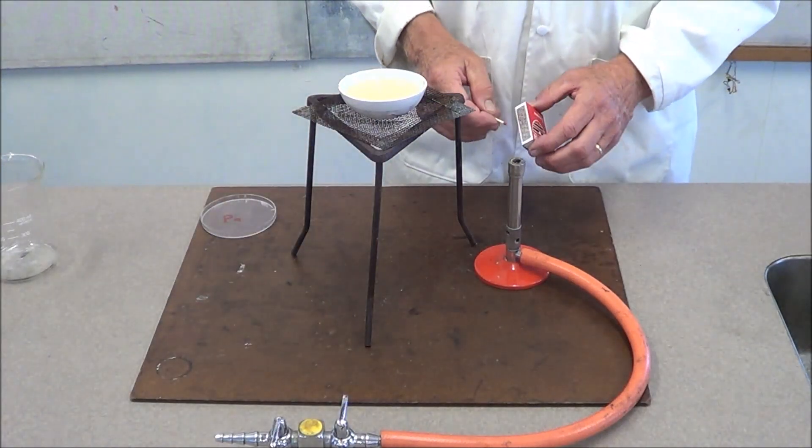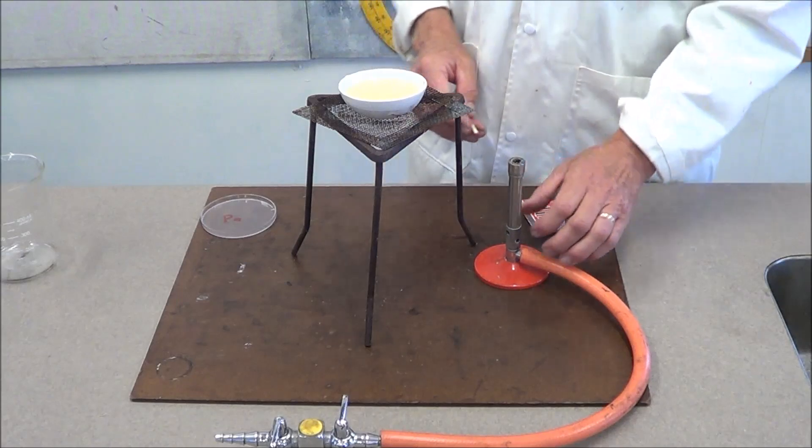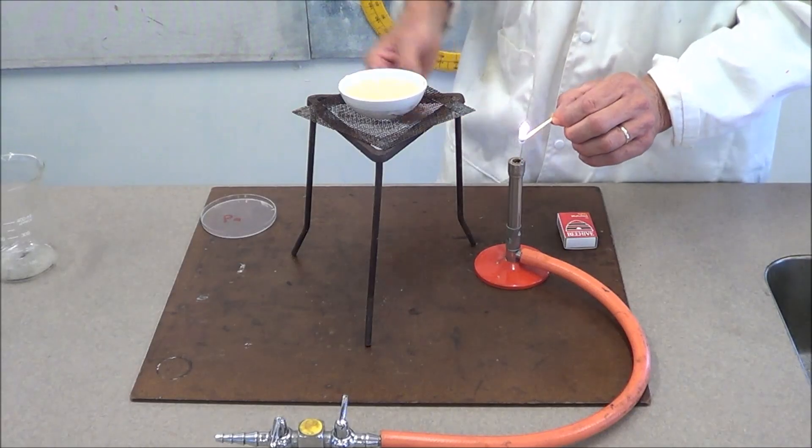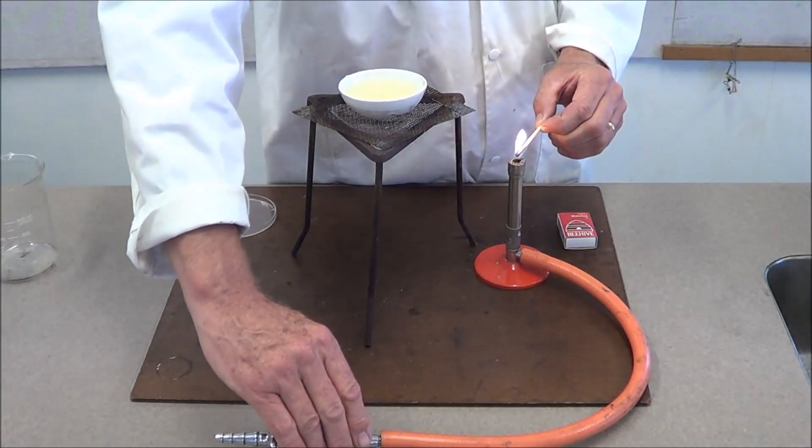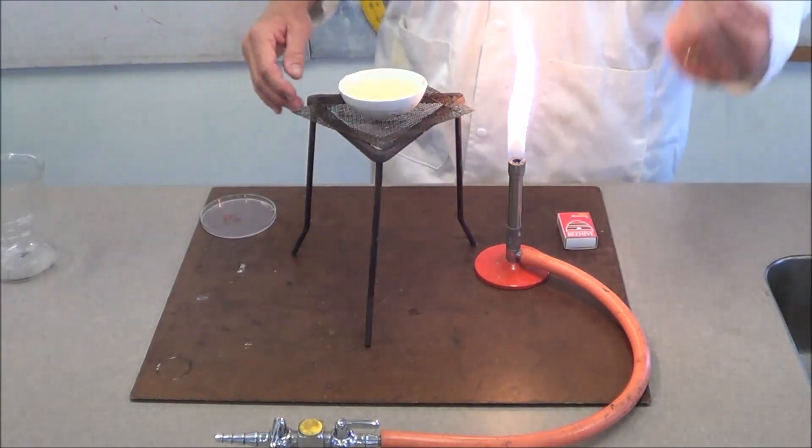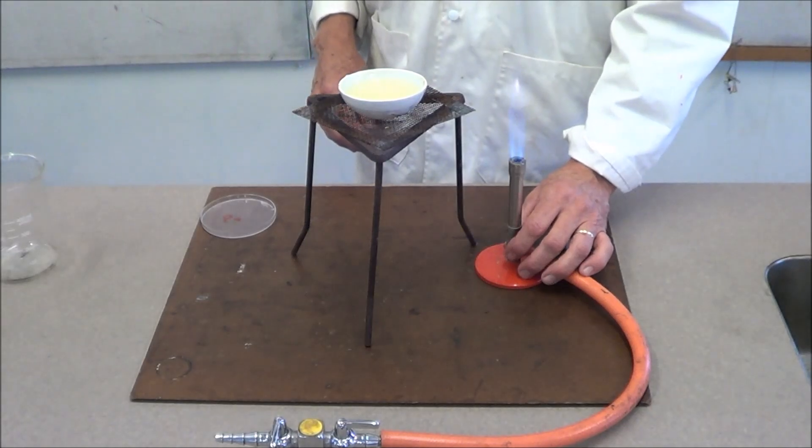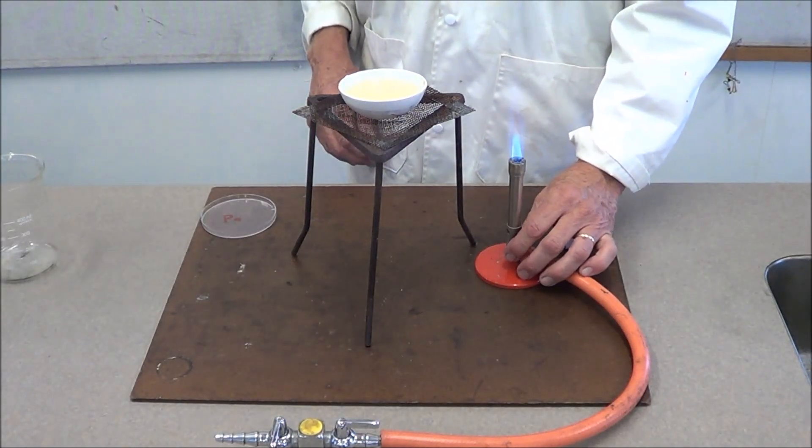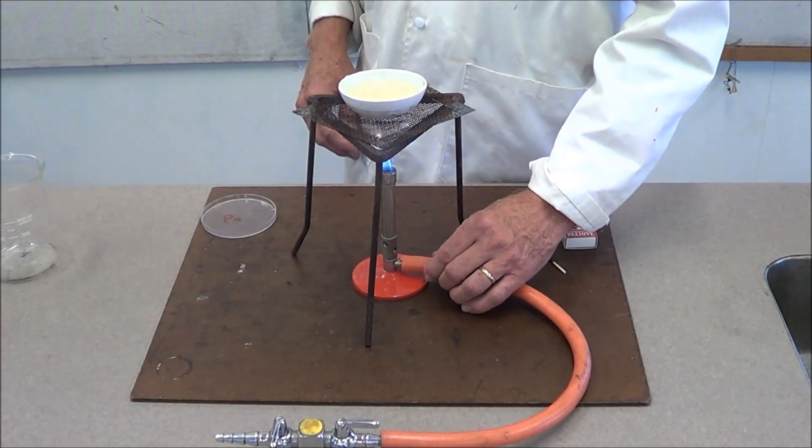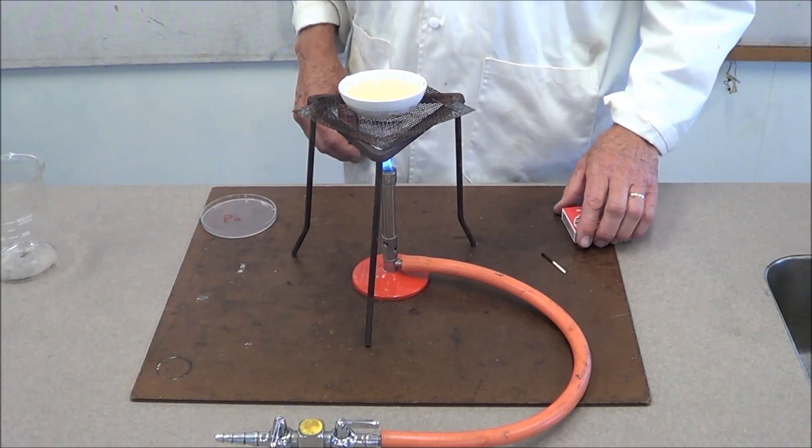Light up your Bunsen. Ensure you've done a safety check on the hose. The air hole is closed and you light it in a safe way. If you're using a flame, you have your flame ready before the gas arrives. Then you turn on the gas and put a little bit of air in there so that we don't get a smoggy room.